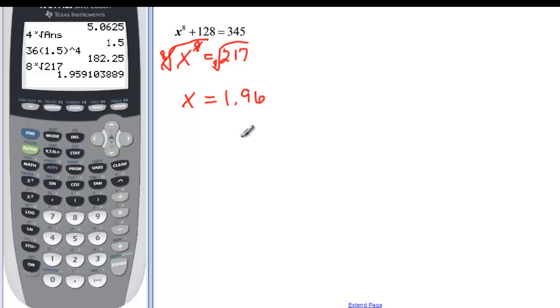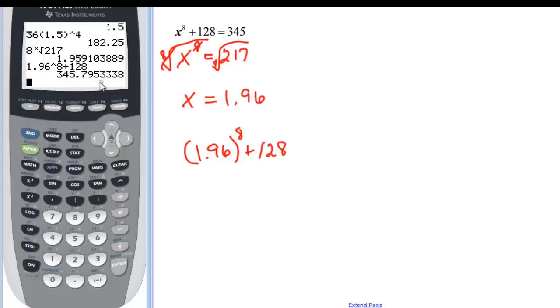That's an approximation. So if I plug that one back in, 1.96 to the 8th. And then plus the 128th. I probably won't get exactly 345. But I should be close if I found the right answer. So let's try it out. 1.96 carat 8. And then plus my 128. And that gives me 345.79.